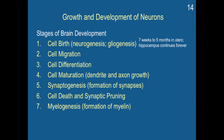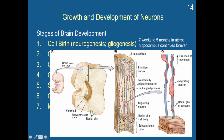Cell birth occurs from seven weeks to five months in utero, and in the hippocampus it continues forever. Cell migration is radial and glial-guided, occurring from seven to fourteen weeks in utero. Here's a picture showing the ventricular zone, where stem cells occur and begin to differentiate, and then migrate out. The subventricular zone is where they're made, and the migrating neuron moves out into the primitive cortex area, where some will start to have lateral connections. The migrating neuron gets into the place where it wants to be, and then it will differentiate.